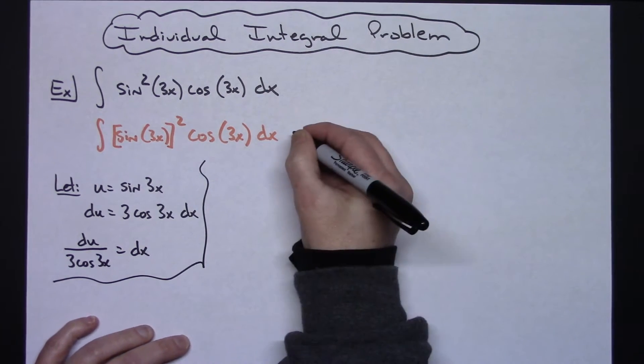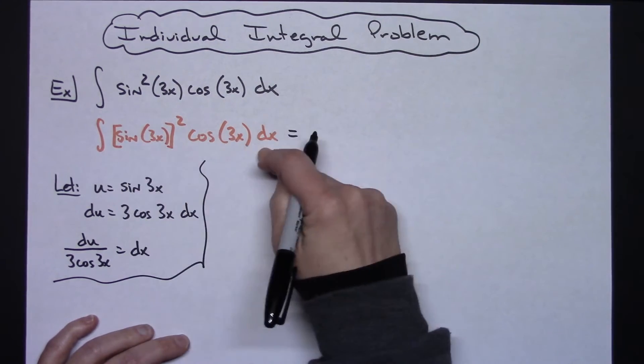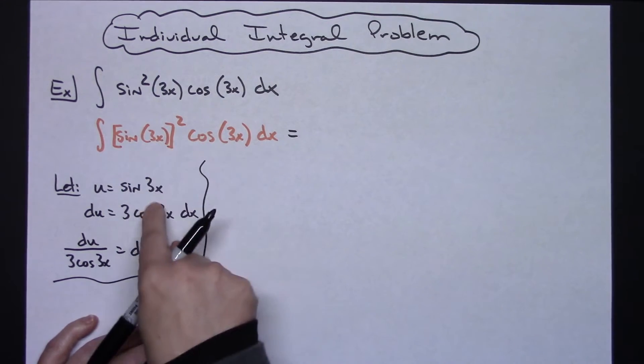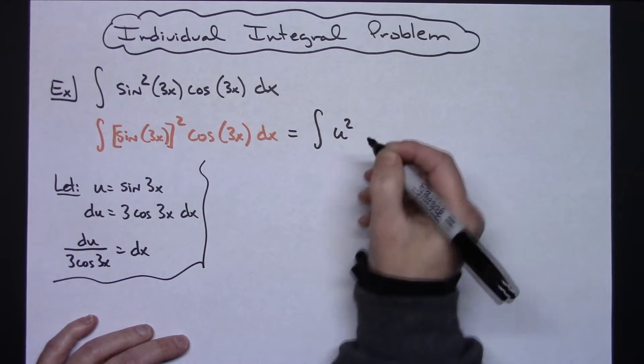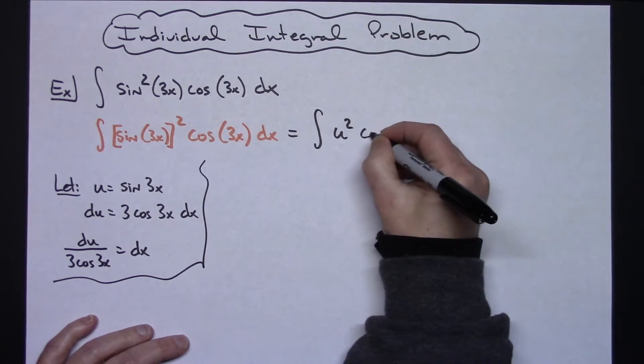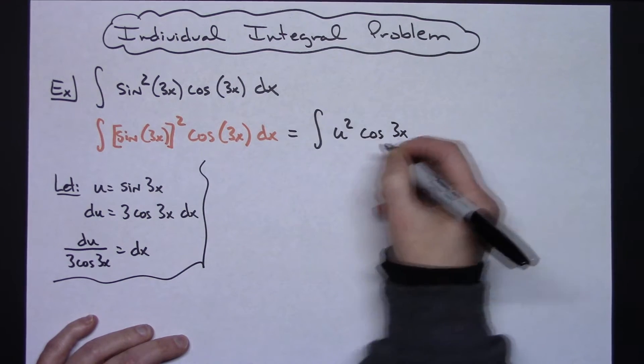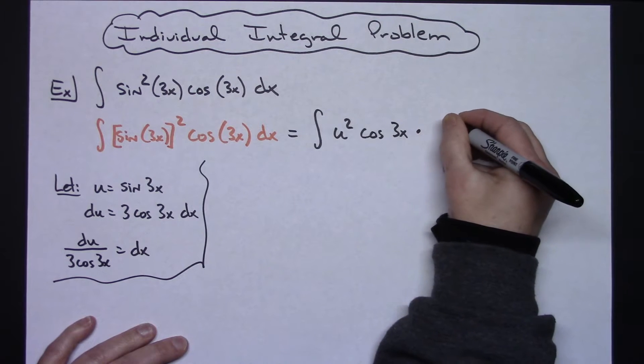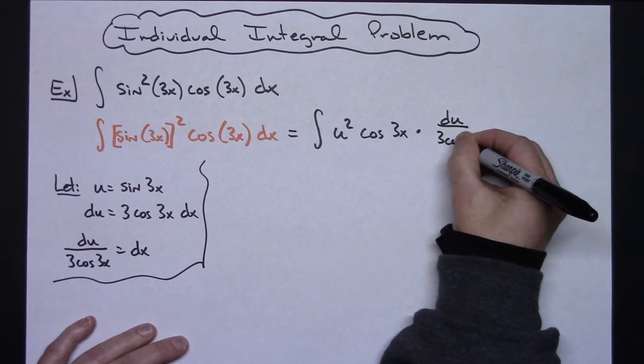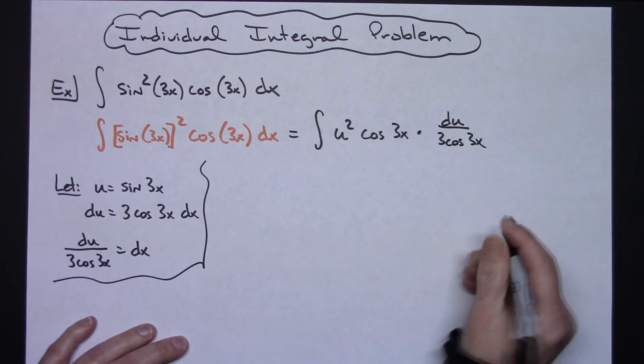Now coming up here and doing some substituting: sine of 3x is my u right there, so I can write this as the integral of u squared. This has to stay, so cosine of 3x—I'm going to replace dx with what it equals—so times du over 3 cosine 3x.